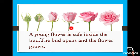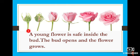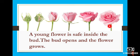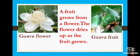And then next we see about — what is it, children? Very good. Bud. What's the young flower? The young flower is safe inside the bud. It's safe inside the bud. The bud opens and the flower grows. First it's like a bud, then slowly it opens and opens. At last we get a big rose flower. The young flower is safe inside the bud.